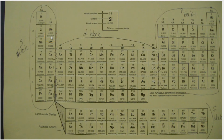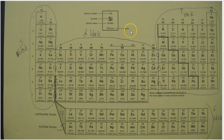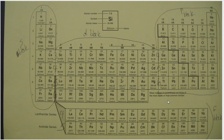The P sublevel has a maximum of six electrons, and this section right here is six elements wide — so this is the P block. The D sublevel can hold a maximum of ten electrons, and this section here is ten elements wide, representing the D block. And the F sublevel can hold a maximum of fourteen electrons, and these two rows down here are fourteen elements wide, so they are called the F block.